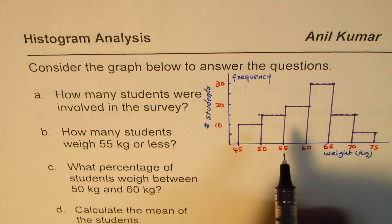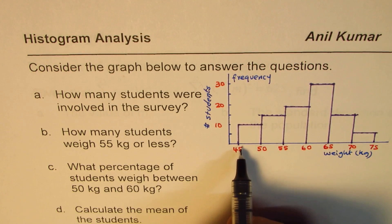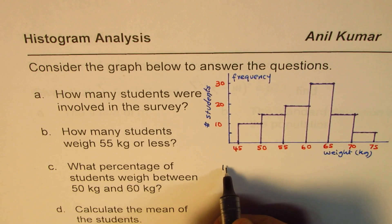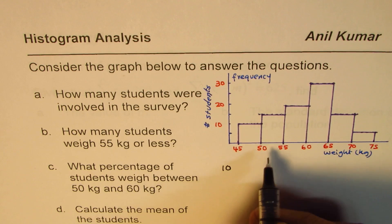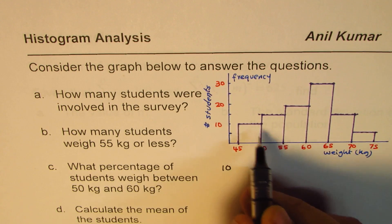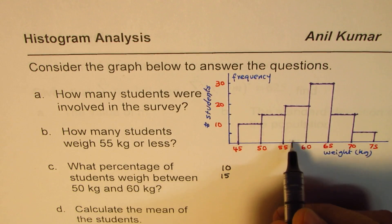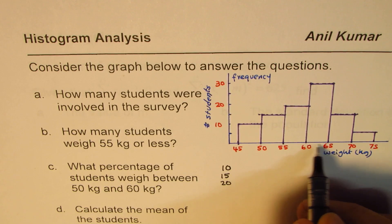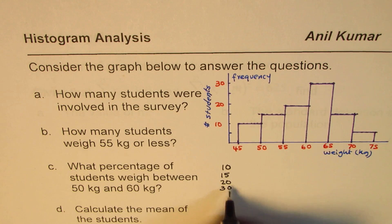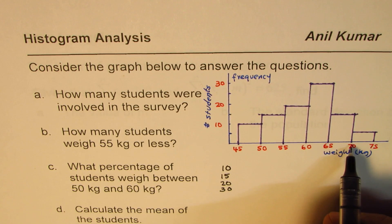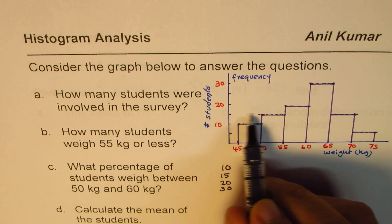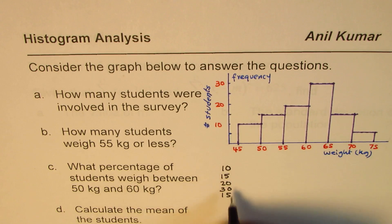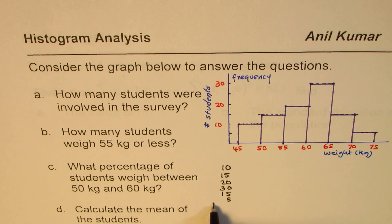To find how many students there are, let us look into each interval. From 45 to 50 we have 10 students, so in the first group we have 10. The second group, from 50 to 55, we have 15. The third group, 55 to 60, we have 20 students. In the group 60 to 65 there are 30 students. From 65 to 70 the count is 15, and from 70 to 75 there are 5 students.